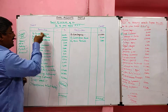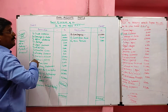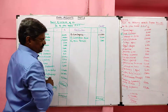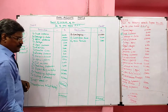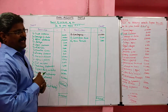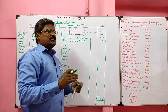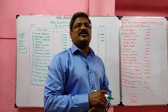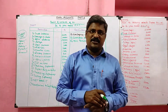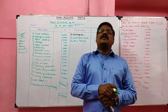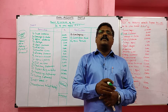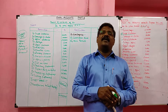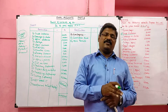Sometimes the debit value may be more than the credit side — in that case we get a net loss. The net profit should be added to the capital. We have now completed the preparation of the profit and loss account. In the next class we will learn about the balance sheet. Till then, bye and thank you.